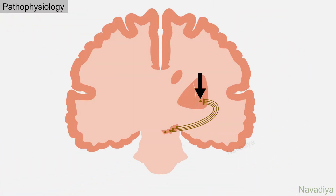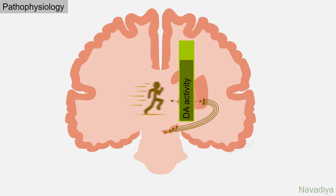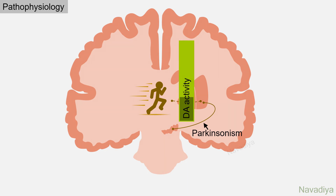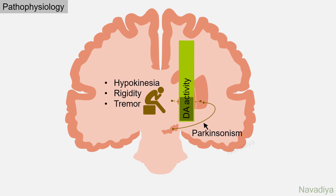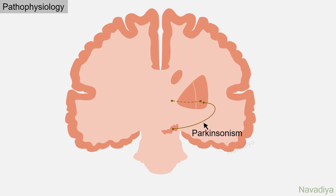Post-synaptic neurons in turn connect with the thalamus and motor cortex. Dopamine activity on these neurons is essential for carrying out body movements. Now pathology: in Parkinson's disease, neurons of the nigrostriatal pathway degenerate, so dopamine activity is reduced. This results in various movement problems like hypokinesia, rigidity, and tremors.